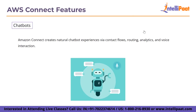The next feature is chatbots. Amazon Connect creates natural chatbot experiences via contact flows, routing, analytics, and voice interaction. Additionally, brands can add Amazon Lex, which is another AWS service. The speech recognition and natural language processing technologies utilized by Alexa are also used by this service. Before every client request is routed to an agent, functionality to handle early encounters or answer typical inquiries is provided. Creating a chatbot is simple, quick, and requires no coding. Moreover, every discussion is safely encrypted.